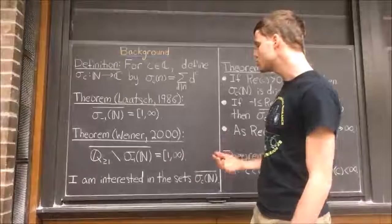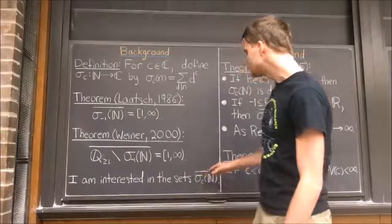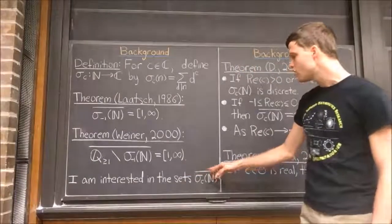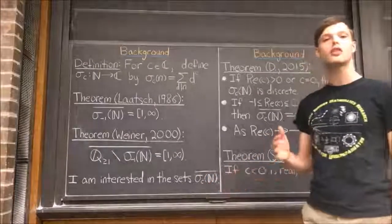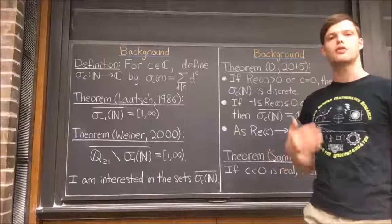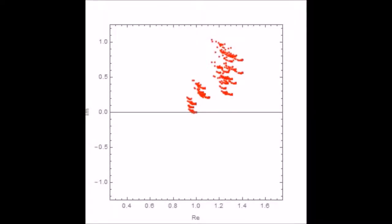I'm interested more generally in the sets that we can obtain by taking topological closures of the ranges of these divisor functions σ_c for other complex numbers c. For example, here's a picture of what this set looks like when c is the complex number -1.3 + i. And we can look at how this set moves when we vary the parameter c.